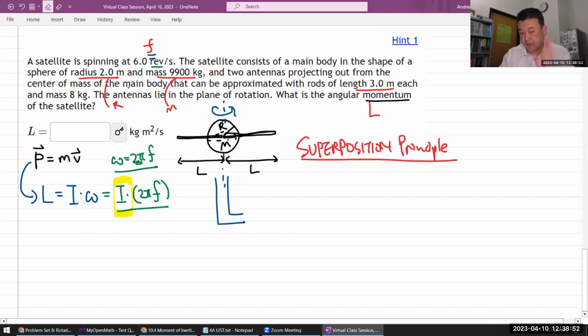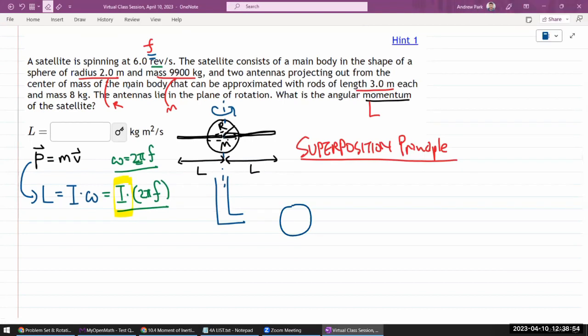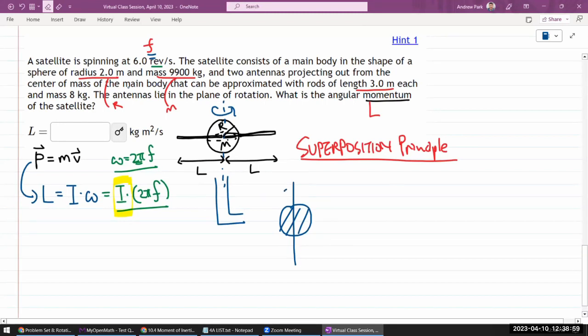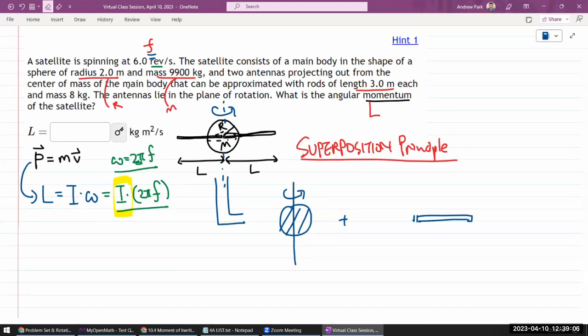Because through superposition principle, what you can say is that this object can be thought of as a sphere, a solid sphere rotating about an axis going through its center, plus two rods—or I guess one rod plus another rod. You can imagine superposing three different objects instead of two: two rods at either end.